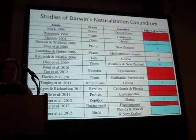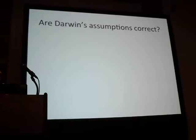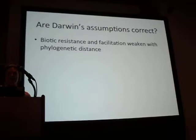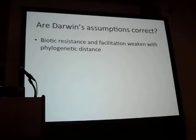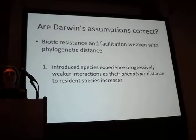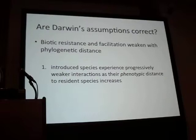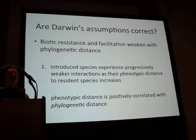However, there has been really not much testing about whether Darwin's underlying assumptions are actually correct — specifically that there's a negative relationship between phenotypic distance and species interaction strengths, so that as phenotypes are more similar there's a stronger interaction strength, and as phenotypes become more dissimilar there's a weaker interaction. And second, that there's a positive relationship between phenotypic distance and phylogenetic distance.